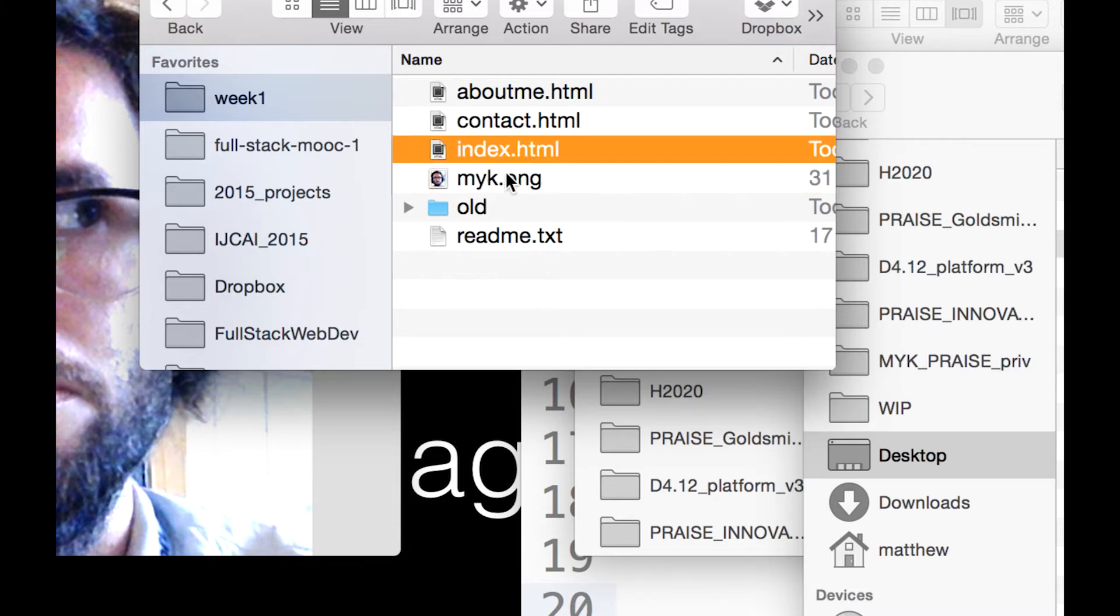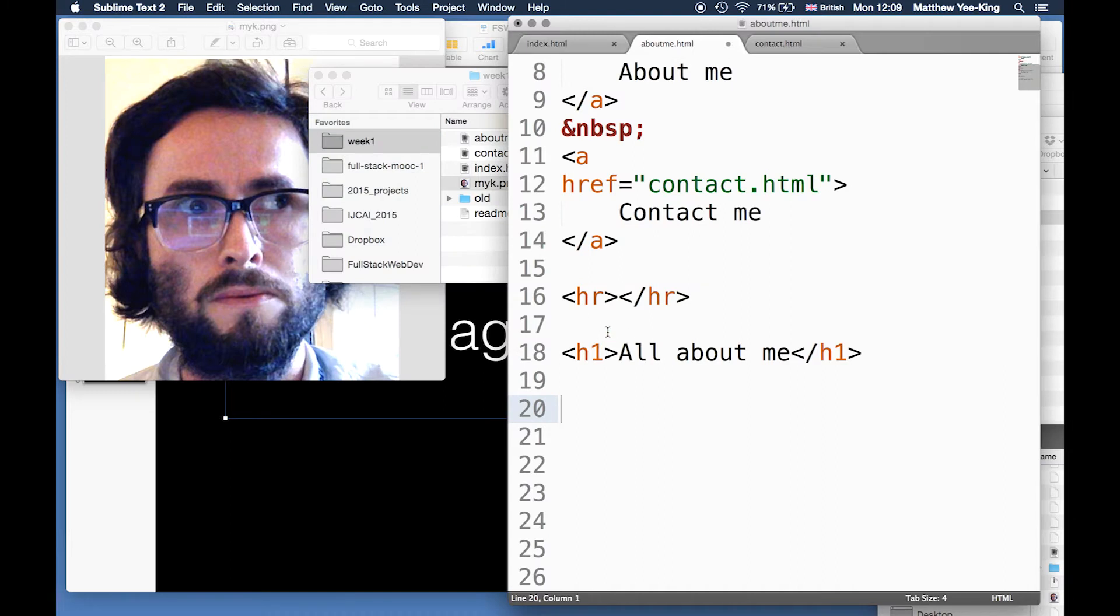Normally if you're working in a word processor you just drag and drop an image, but we can't do that in HTML. We have to make our pages out of different pieces, so we have the HTML file and if we want an image in that page we use a tag to pull the image in. It's the img tag.